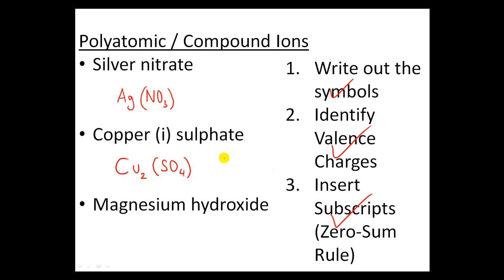A common mistake many students make is they'll write down copper, then the sulfate SO4, see the 1 and think they're done. But that is incorrect. The 1 refers to the valence charge, not the subscript. You still need to apply the zero-sum rule to make sure the charges all add up to zero in the end.